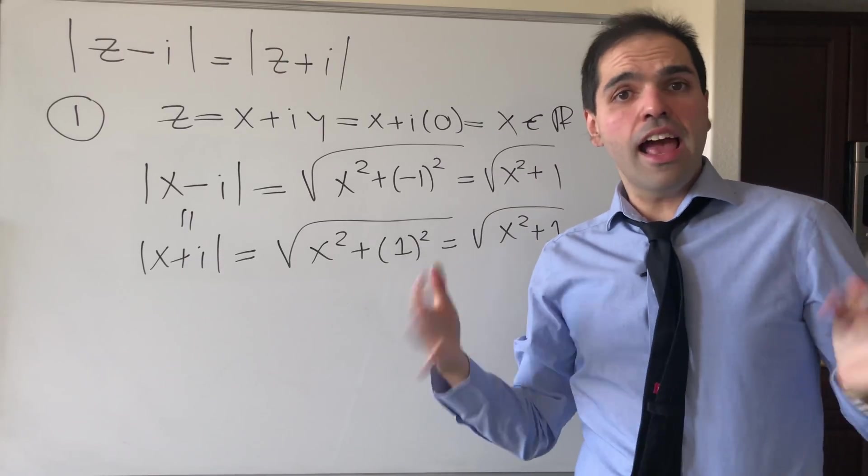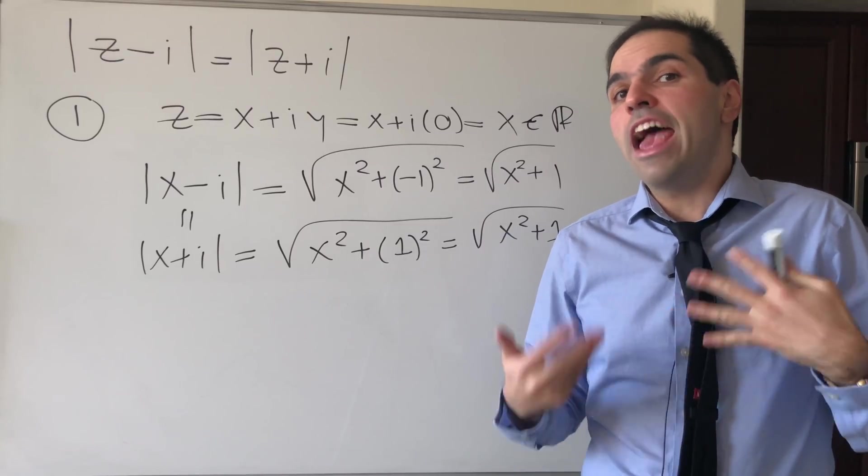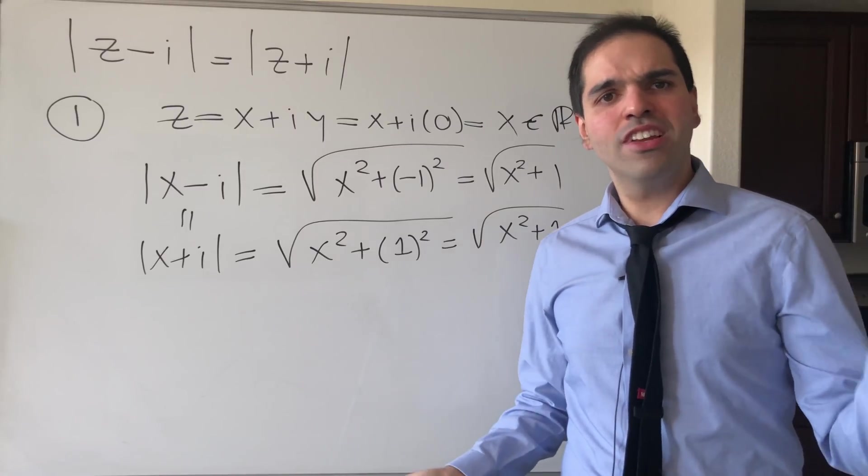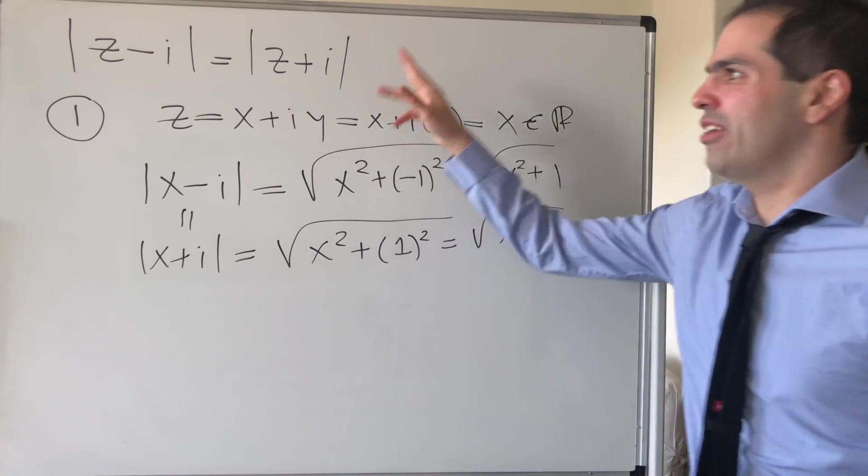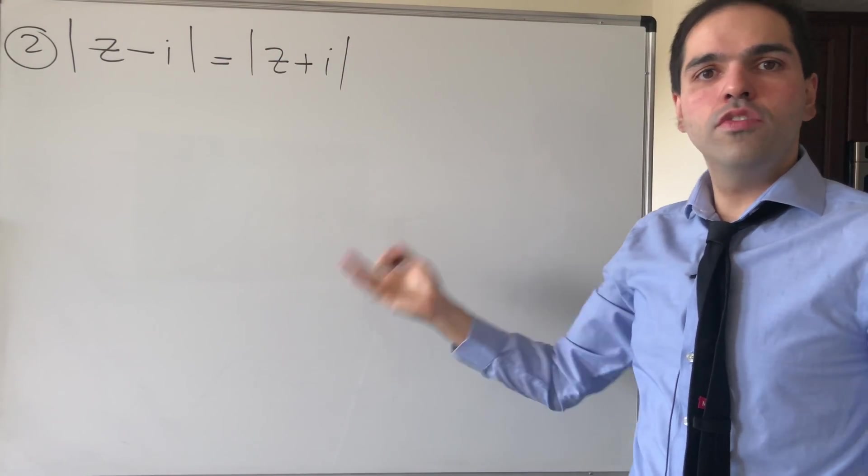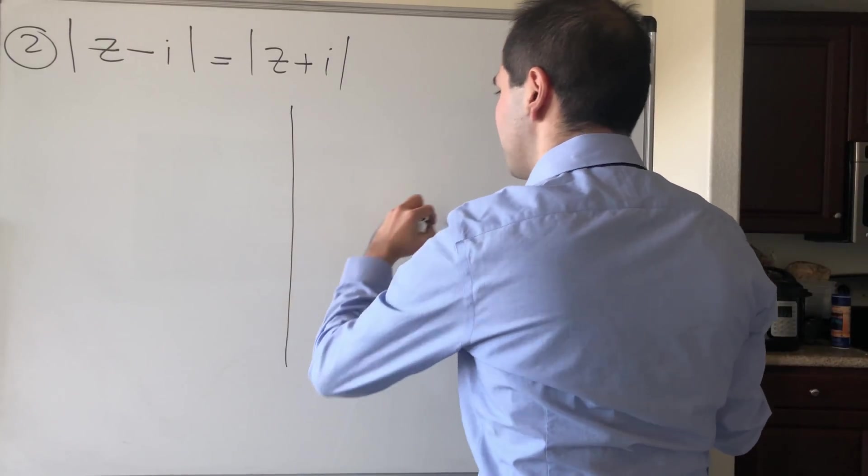Now, that was the algebraic way of solving it, which unfortunately doesn't give you any insight into why the solutions have to be true. But fortunately, there's also the geometric way, which is very, very neat. Because again, let's look at the equation, absolute value of z minus i equals absolute value of z plus i, but in the complex plane.